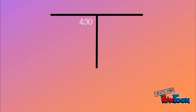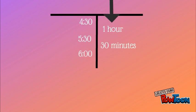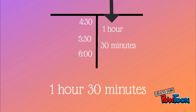I'm going to use the T-Chart strategy to help me find the time in between. We start at 4:30. In one hour, it will be 5:30. In 30 minutes, it will be 6 o'clock. We have to count up the sides — one hour and 30 minutes is the time in between.